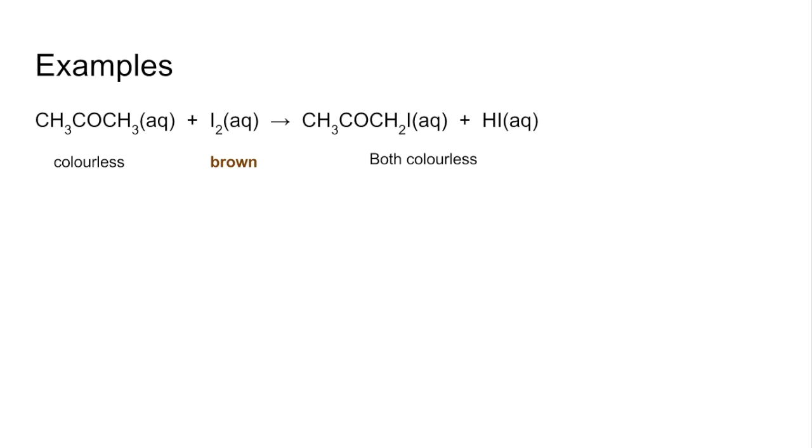An example of where you've got a colored product forming: we've got this one here, the reaction between thiosulfate ions and acid. You can see they're both colorless and one of the products there, that sulfur, is a yellow solid. So over time that yellow color will intensify as the concentration of sulfur increases.